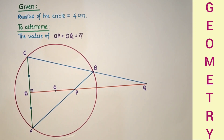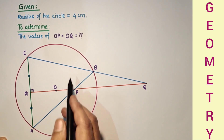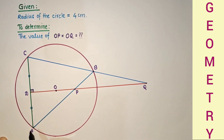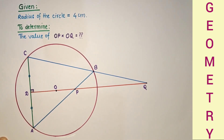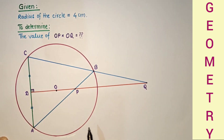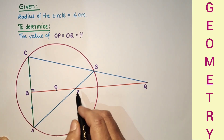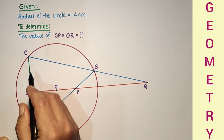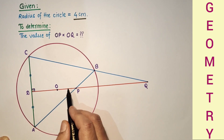Hi everyone, today we will discuss this question. A circle is given with O as the center. CA is a chord and DQ is the perpendicular bisector of the chord. CB is extended up to Q and AB is joined. AB intersects DQ at point P. The radius of the circle is given as 4 cm, and we have to find the value of OP into OQ.